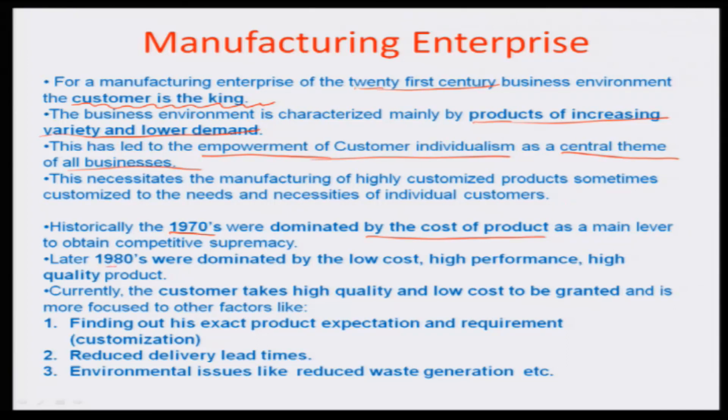Then came the mid-80s, where domination was not only on cost but also on high performance and high quality of the product — people wanted the very best at the lowest price. Currently, the concept has altogether changed. It does not really talk about quality and low cost as main issues, because cost-performance is taken as a baseline for entering a particular product domain. Companies are expected to strive hard for high quality and low cost.